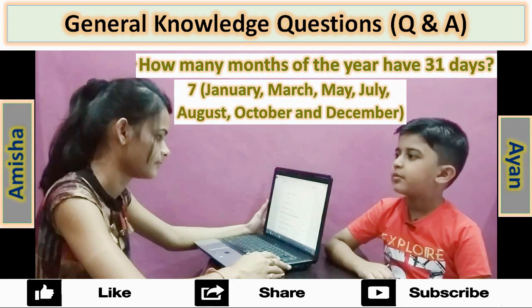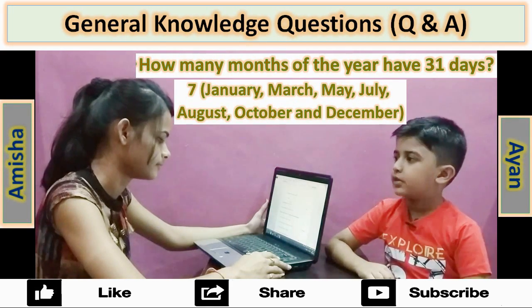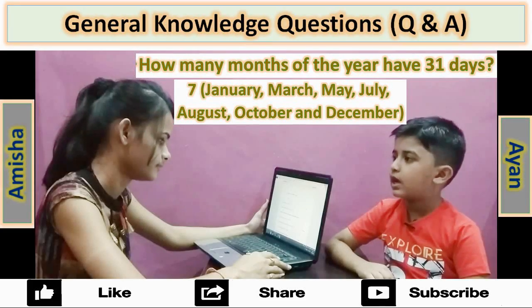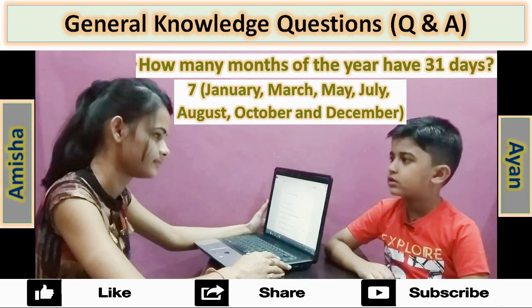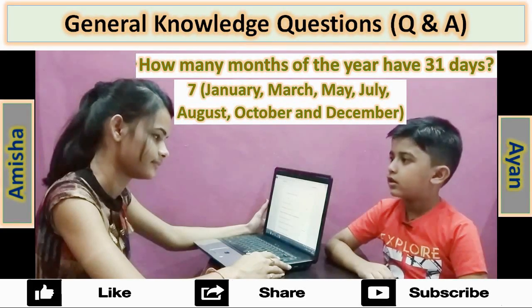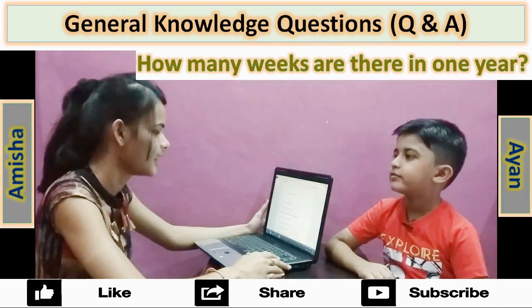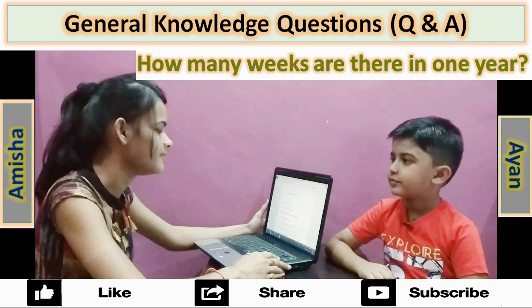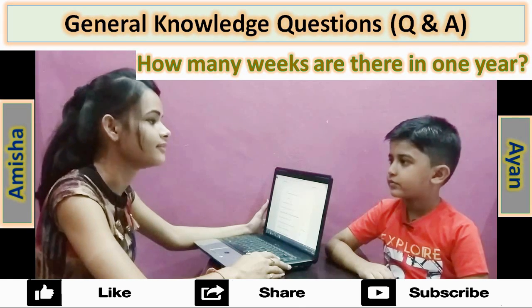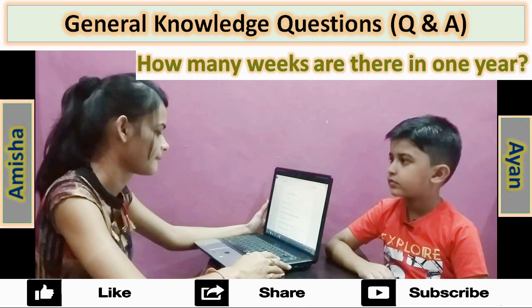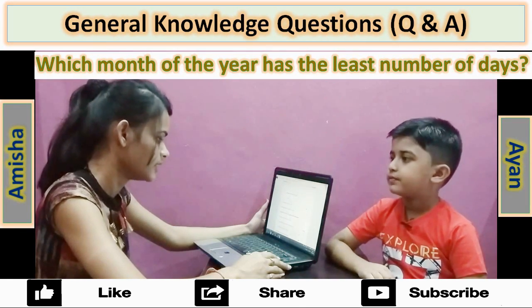January, March, May, July, August, October and December. How many weeks are there in one year? 52.